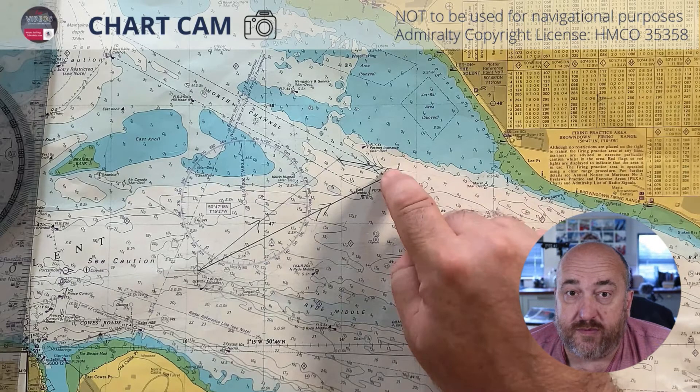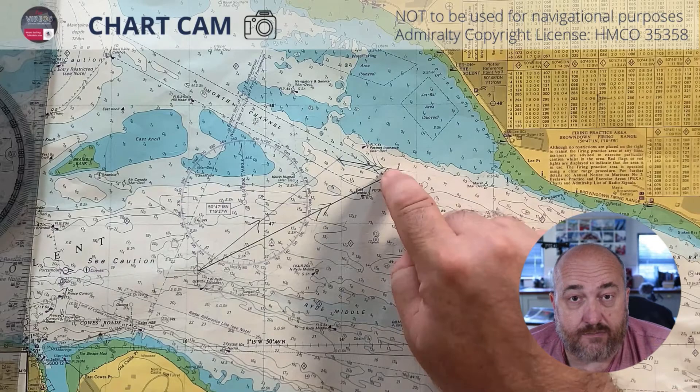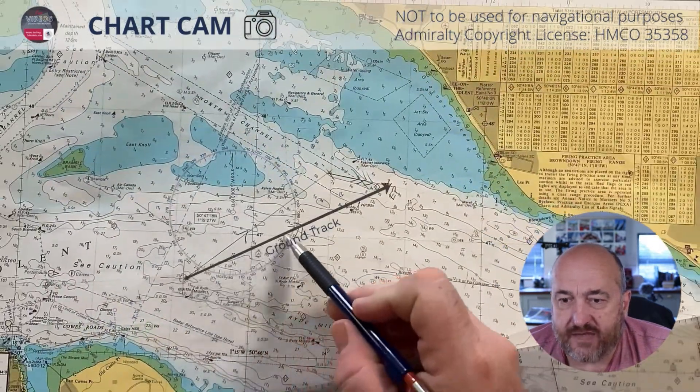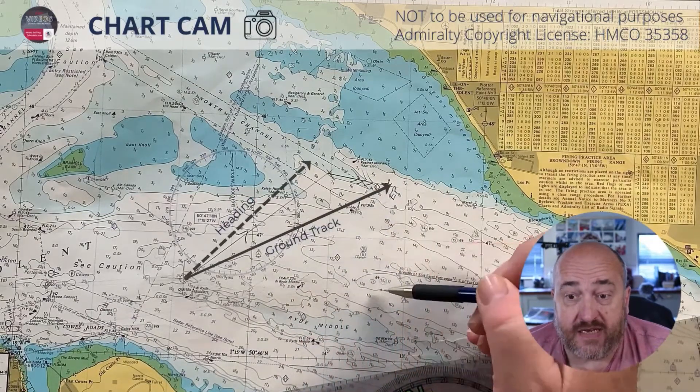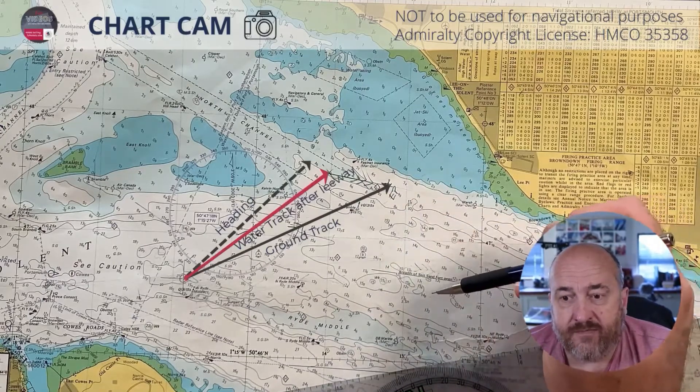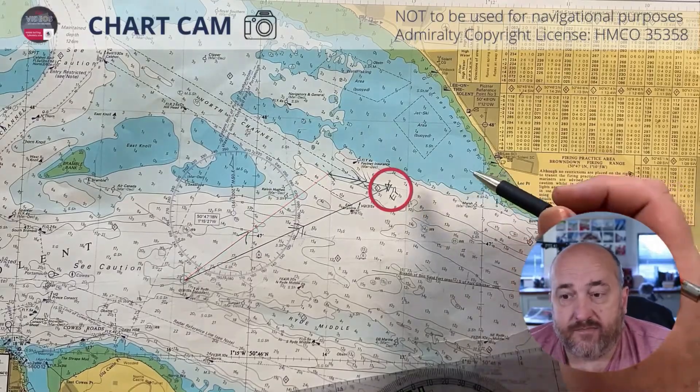Obviously in enclosed waters like this you're probably going to be piloting to a large extent anyway, but this illustrates how to calculate and plot an estimated position. So just to recap: that is our ground track — what we're travelling over. Our heading is our compass heading adjusted to true. Our water track allows for leeway. The estimated position is the end of those vectors applied. The difference between a course to steer and an estimated position is that an estimated position is largely looking back at what we've done and where we are now, whereas a course to steer is looking at where we are now and what we must steer to get to where we want to go.